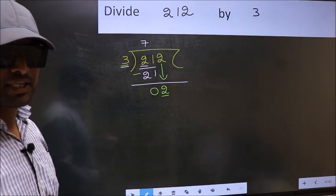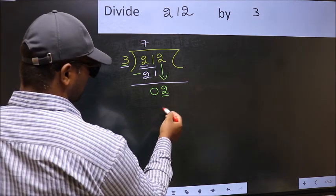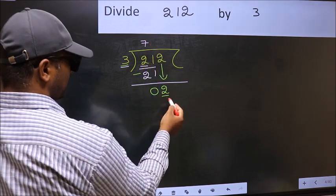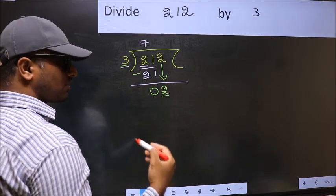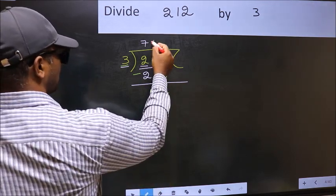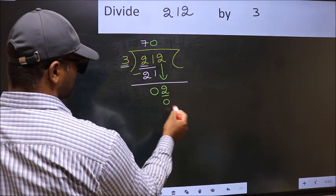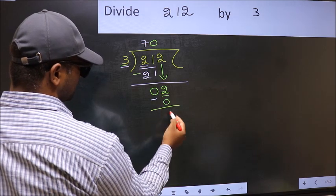Instead, what you should think of is: what number should we write here? If we take 1 here, we get 3, but 3 is larger than 2. So what we should do is put 0. So 3 into 0 is 0. Now subtract: 2 minus 0 is 2.